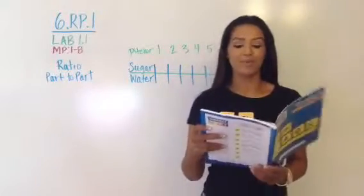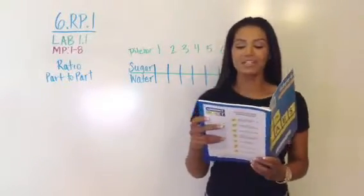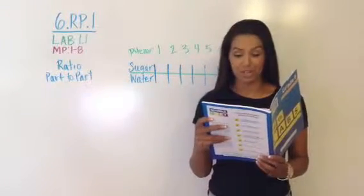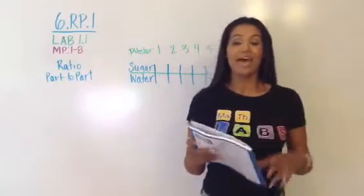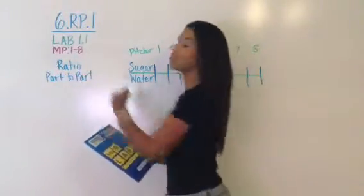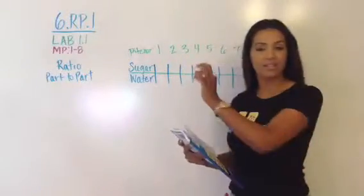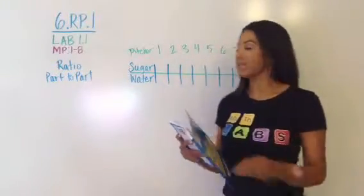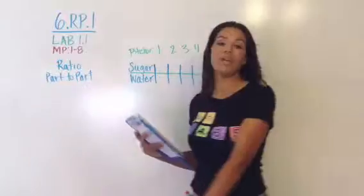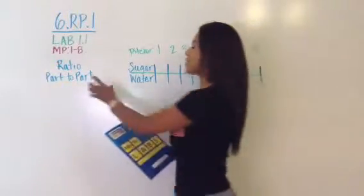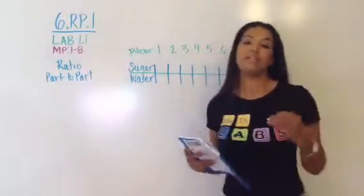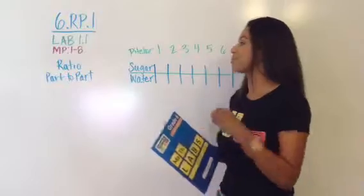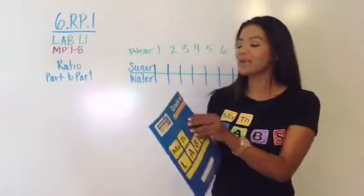All right, so lab 1.1, please read the objective in your head as I read it aloud. I can use a ratio table to add to find a part-to-part ratio and equivalent ratios. And we're going to focus on this word ratio. So we're going to be filling out our violet template with our vocabulary. That's something that we're going to do this week so that we have a go-to place for our vocabulary for this unit. And this idea of part-to-part is what we're looking at in this particular lab. In fact, the first three labs are part-to-part and then we look at a part-to-whole.